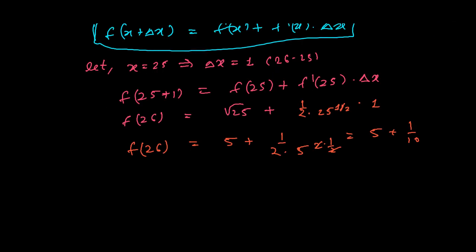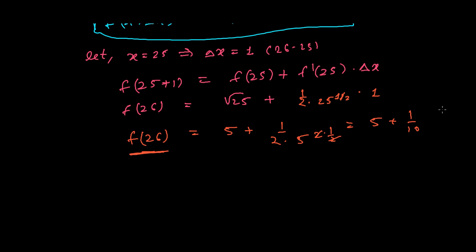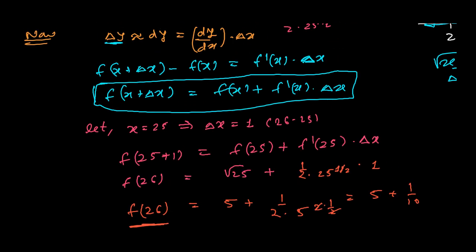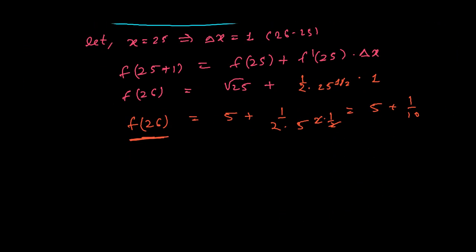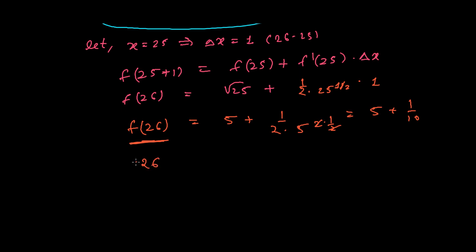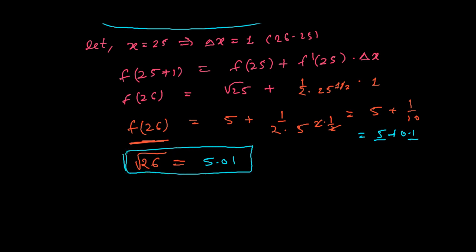Since f(x) = √x, we have f(26) = √26. So √26 ≈ 5 + 0.1 = 5.1. This is how we find the approximate value of √26 using differentiation.